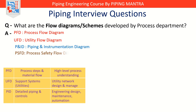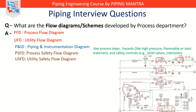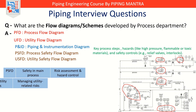Fourth is PSFD, that is Process Safety Flow Diagram, and USFD, that is Utility Safety Flow Diagram. These diagrams focus on the safety side of things. The PSFD looks at the main process from a safety perspective, highlighting hazards like high pressure, flammable, or toxic materials, and showing safety controls like relief valves or interlocks. Similarly, the USFD does the same but for utilities — for example, identifying where high pressure steam lines could be dangerous and how those risks are controlled.